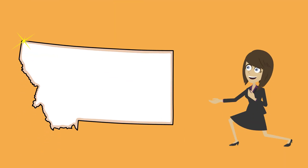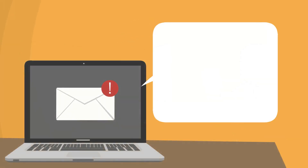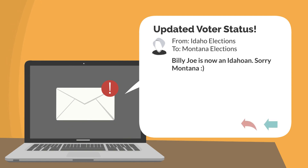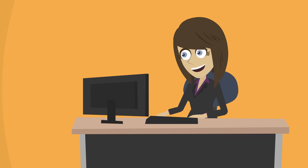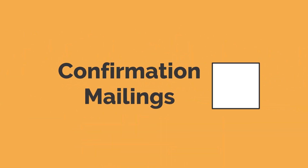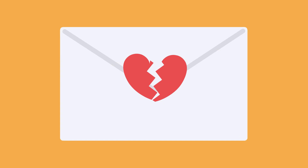Many states, like ours, voluntarily pass this information along to the state or jurisdiction you moved from. Likewise, we receive notification from other states that one of our voters has registered with them, so we can cancel their registration with us. By cooperating in this way, voter registration information is updated accordingly when people move. In addition, election officials send confirmation mailings to check whether voters remain at their registered address. If the voter does not respond, deactivation of the registration is initiated.